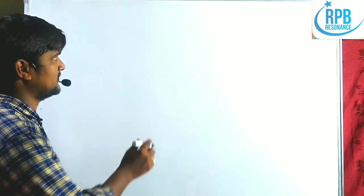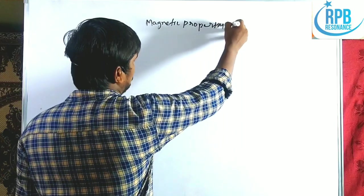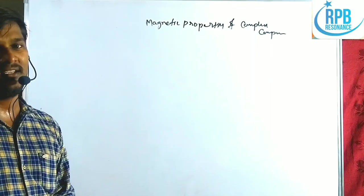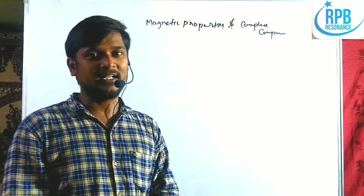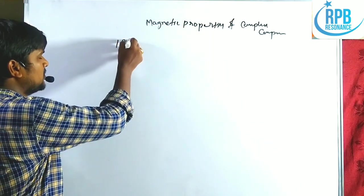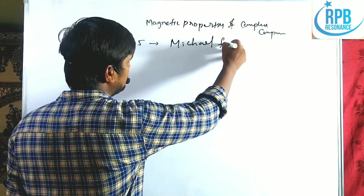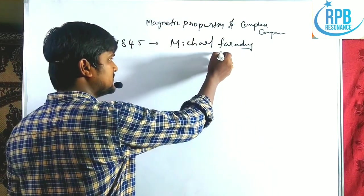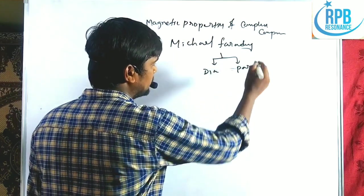Welcome to RPB Resonance Chemistry. We are discussing magnetic properties of complex compounds, also known as coordination compounds. Material properties like crystals have two types: electrical properties and magnetic properties. Until 1845, the term was not used in chemistry. In 1845, Michael Faraday first studied the magnetic properties of crystals and classified materials into two types: diamagnetic and paramagnetic species.